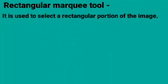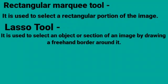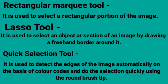Rectangular Marquee Tool: It is used to select a rectangular portion of the image. Lasso Tool: It is used to select an object or section of an image by drawing a freehand border around it. Quick Selection Tool: It is used to detect the edges of the image automatically on the basis of color codes and do the selection quickly using the round brush tip.